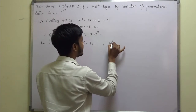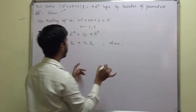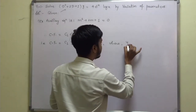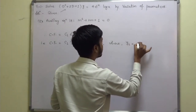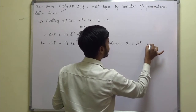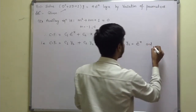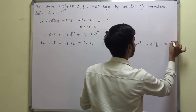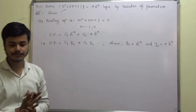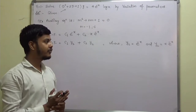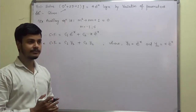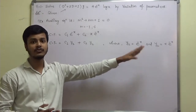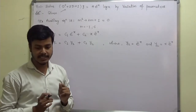What is y₁? y₁ = e^(-x). And what is y₂? y₂ = x·e^(-x). Now, remembering the second step: after finding the complementary function and y₁, y₂, we have to find out the Wronskian.